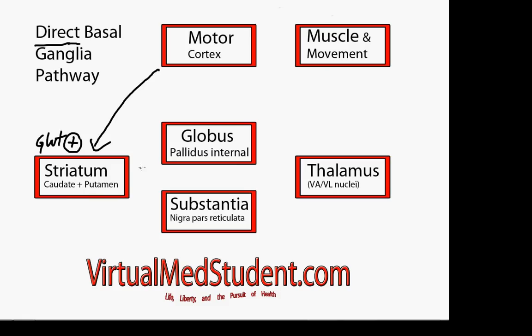Now that these neurons are firing faster, they send increased inhibitory signals — marked with a minus sign — via the neurotransmitter GABA to the globus pallidus internal segment and the substantia nigra, which in turn decreases the firing or the messages sent by these two basal ganglia structures to the thalamus.